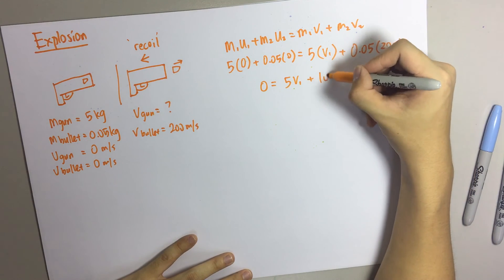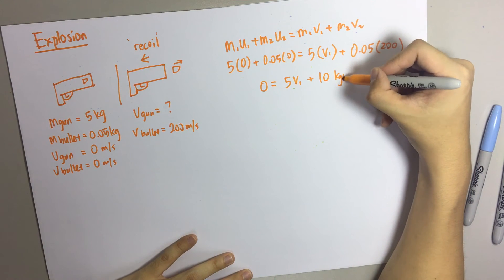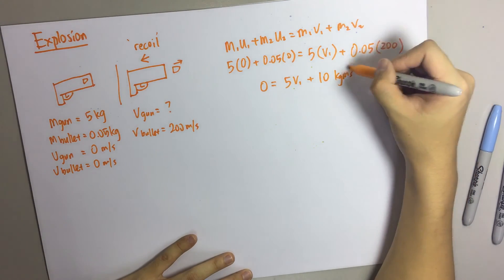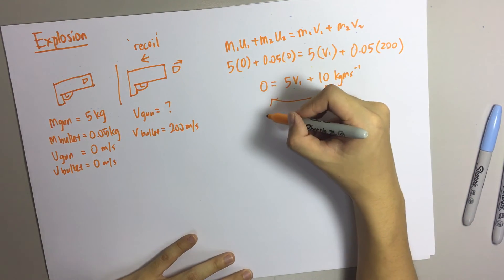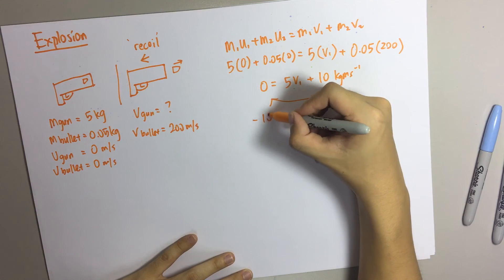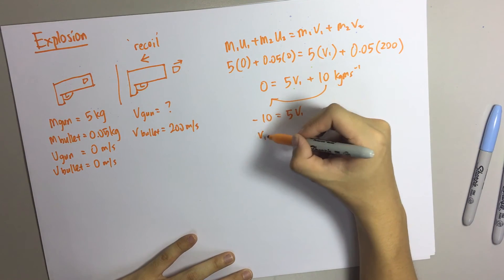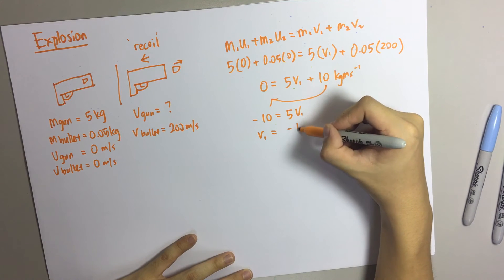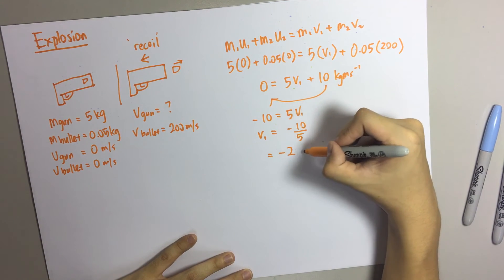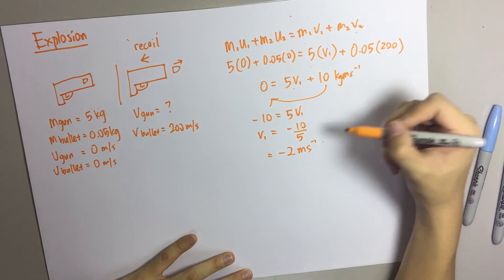And then at here, 1, 2, V, 10. So when this is moved to this side, it will be negative 10, 5V. So V1 equals to negative 10 divided by 5, so negative 2 meters per second.